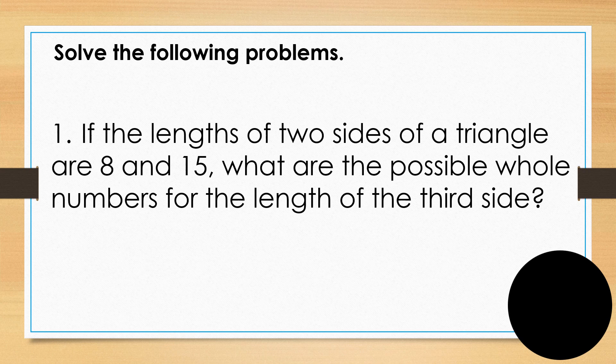So let's solve some problems here. For example, number one. If the lengths of two sides of a triangle are 8 and 15, what are the possible whole numbers for the length of the third side? So in here, probably it's between 9 to 14, right? So we cannot determine exactly without measuring. So I suggest you measure 8 inches with your paper. You measure 8 inches, and another side is 15 inches, and then connect both. So you will determine the length of this side.